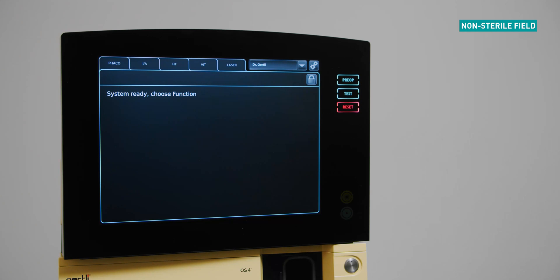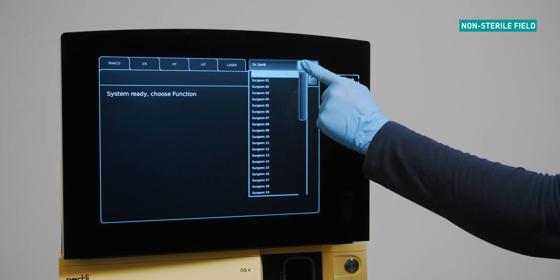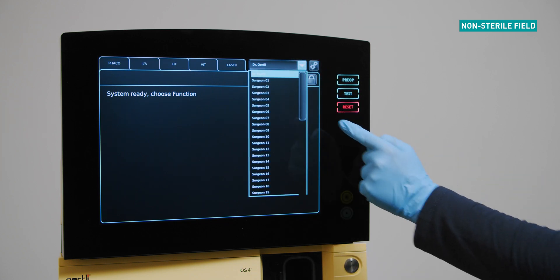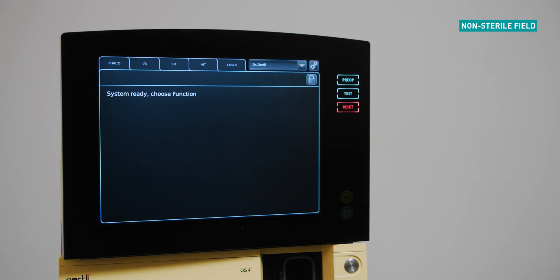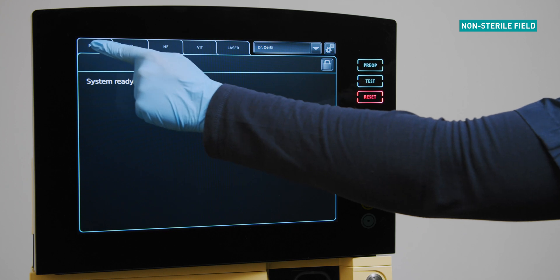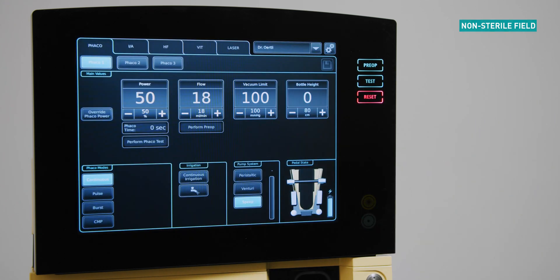Select a surgeon as follows: ensure the pedal is in the zero position, tap on the arrow in the surgeon memory field as indicated, select the desired surgeon from the memory. Select FACO function from the menu tab.